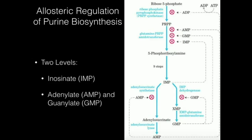Glutamine PRPP amidotransferase does not necessarily get fully turned off by just one of these inhibitors. Suppose the levels of GMP and IMP are low, but AMP is high — AMP will inhibit this enzyme, but it'll only slow it down a little bit. If two of those, maybe AMP and GMP, are high, then it'll be slowed down a lot more. So there are different levels of being slowed down for PRPP amidotransferase. Even with just high AMP, it won't totally inactivate the enzyme, but at least slow it down.